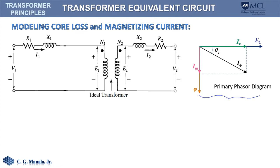If we connect the primary winding to a voltage source, the core loss represents the losses inside the core of the transformer, while the magnetizing current represents the flux that is created inside the magnetic core. I sub C represents the current for the core loss, and I sub M represents the current required to produce the flux inside the core. In this phasor diagram, I sub C is in phase with E sub 1.